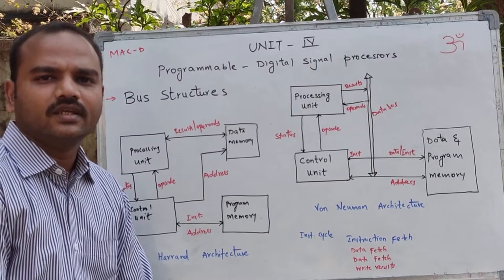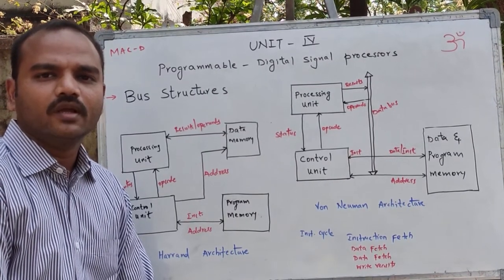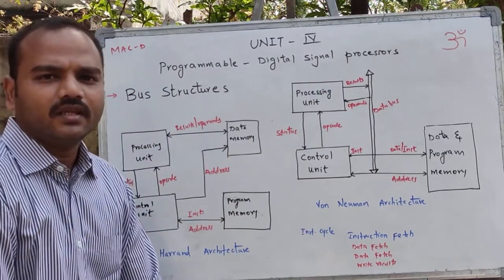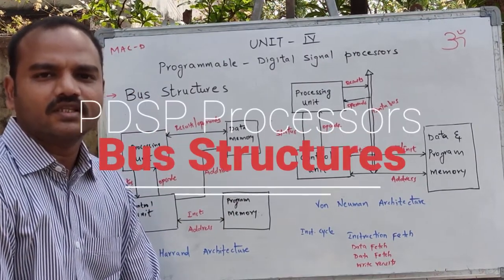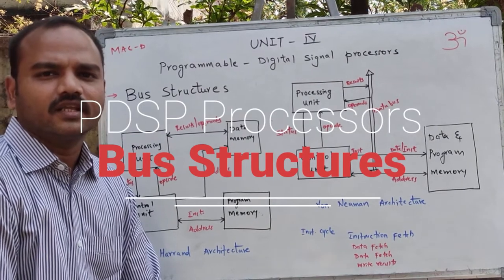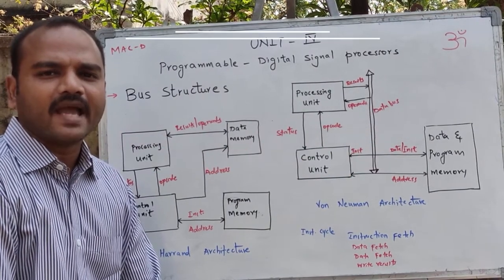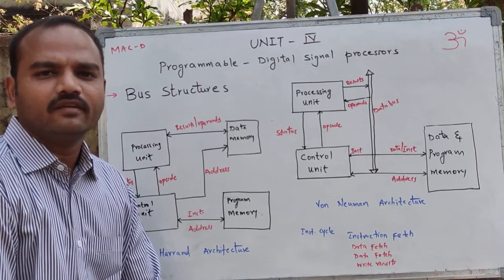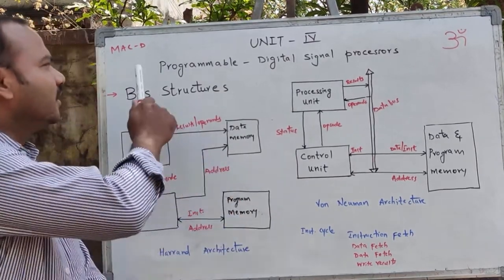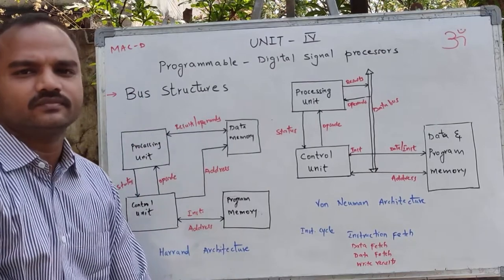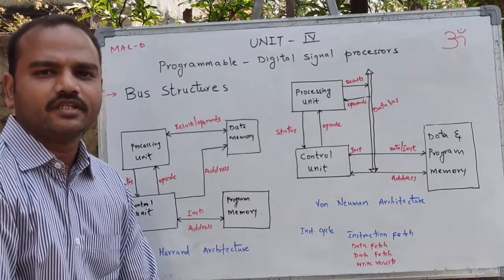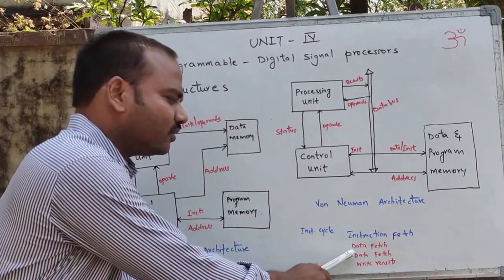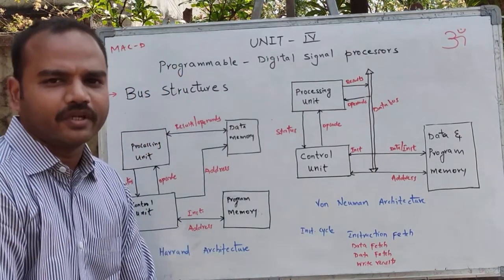In the last lecture, I explained the MAC instruction — M-A-C. In digital signal processors, MAC instruction is implemented as MACD, which stands for Multiply and Accumulate with Data Shift. A MACD instruction requires four sets of operations.